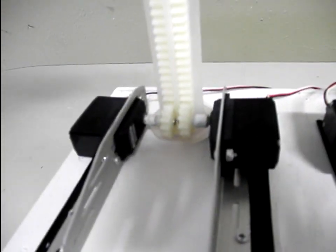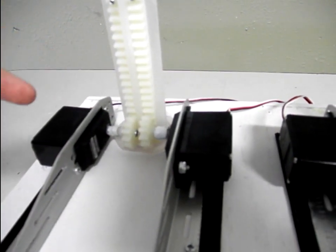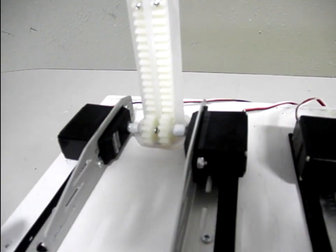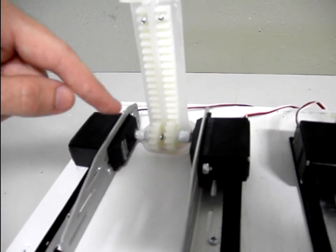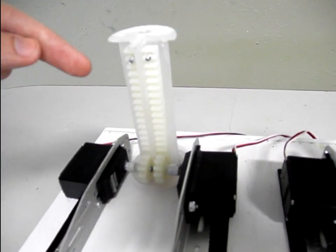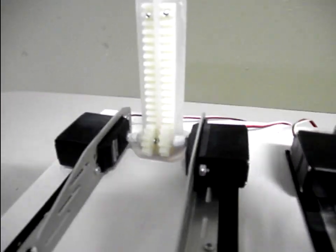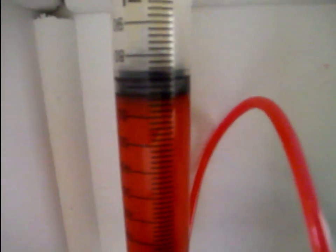These syringes have plungers which are controlled by these servo motors here. These servo motors have gears attached to them, which are connected to a gear train on the plungers of the syringes. So, the servos rotate in the direction that causes the plungers to go downwards, as you can see in the demonstration.